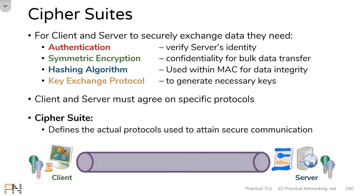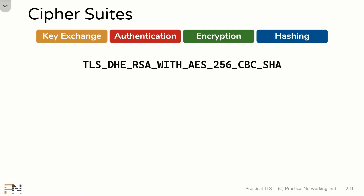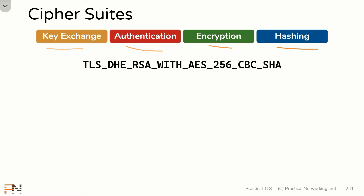One cipher suite is actually going to define four elements: a key exchange protocol, an authentication protocol, a symmetric encryption protocol, and a hashing algorithm. Here is what a cipher suite looks like, and somewhere within this long string of letters are all four of these items.